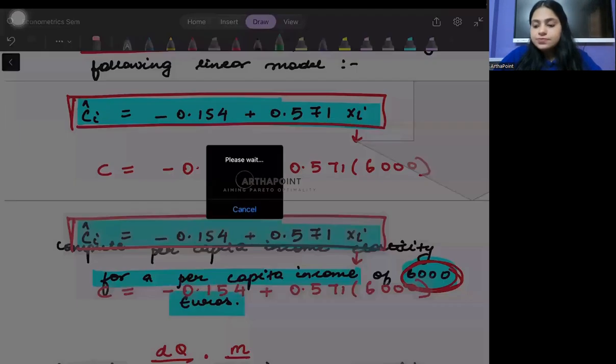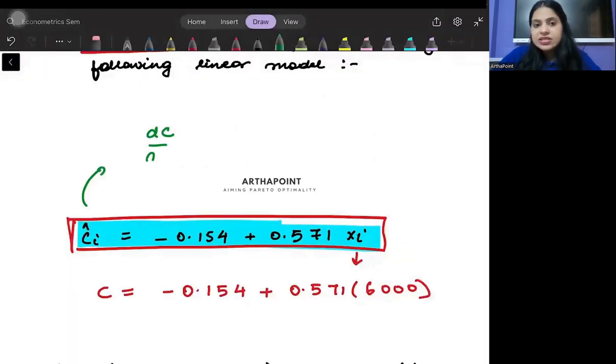Well, it is pretty simple. I will just go ahead and find DC by DX from here and this will give me plus 0.571.